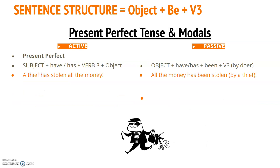Now present perfect tenses: 'A thief has stolen all the money' becomes 'All the money has been stolen by a thief.' The 'by the thief' part is optional. For present perfect passive we use the verb 'to be' in the form 'been' plus the past participle — so 'has been stolen,' where 'been' is the verb 'to be' and 'stolen' is verb three.